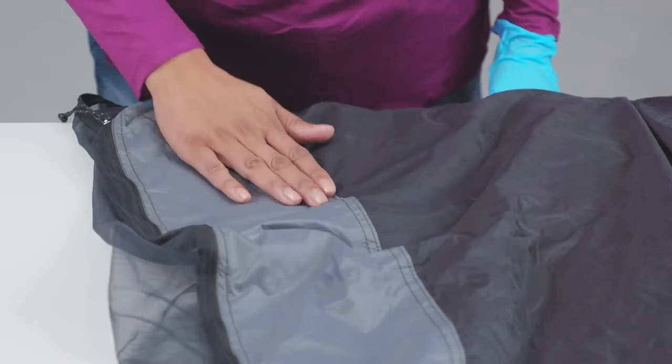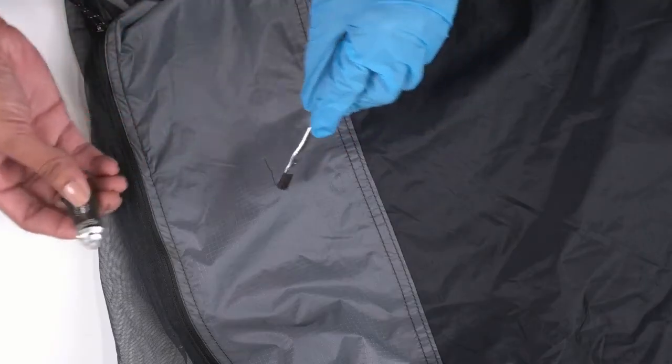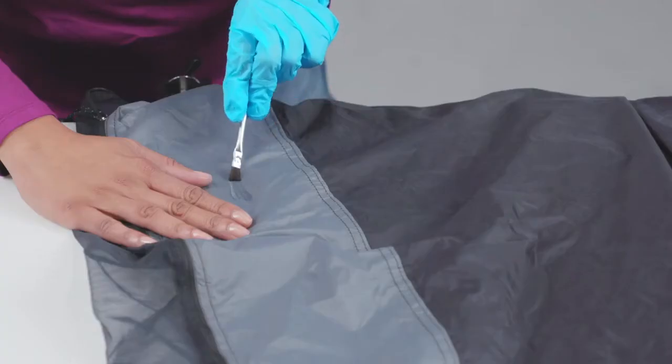To use, start with a clean surface. Brush SeamGrip WP over the tear and let it cure overnight.